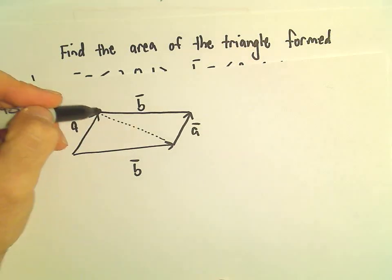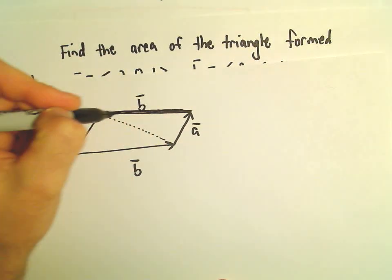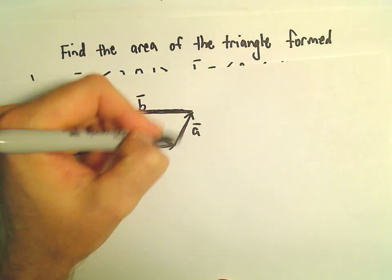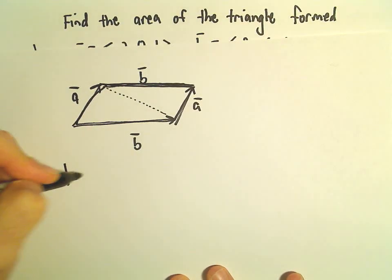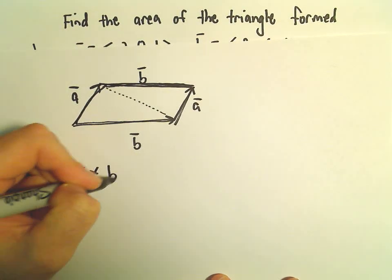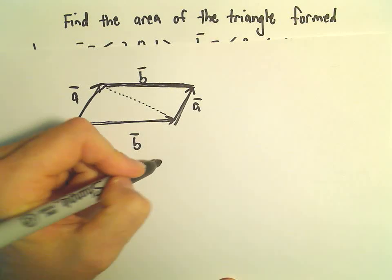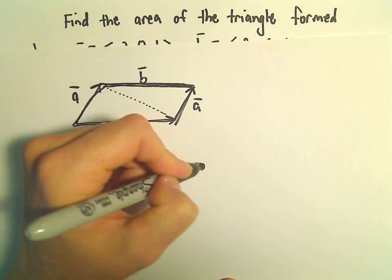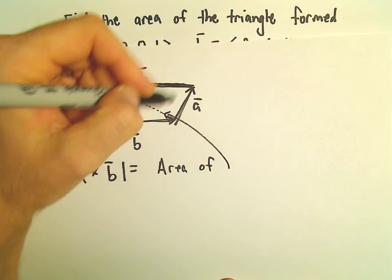To get the area of the parallelogram, my rough-looking little parallelogram, the area of the parallelogram, it turns out, is just going to be the magnitude of A cross B. So that's going to be the area of the entire region.